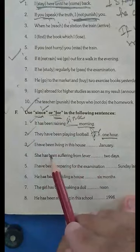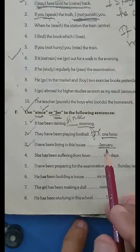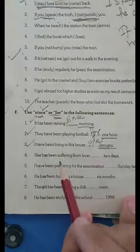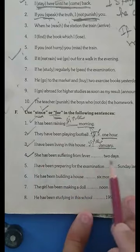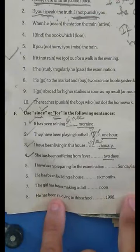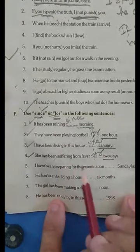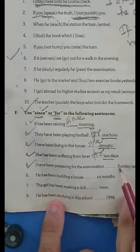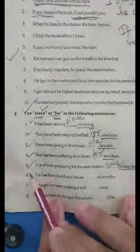Number three: 'I have been living in this house since January.' January is an exact time or period, so we use since. Number four: 'She has been suffering from fever for two days.' Two days is a long period, so we use for. Number five: 'I have been preparing for the examination since Sunday last.' Here is the exact date, since.